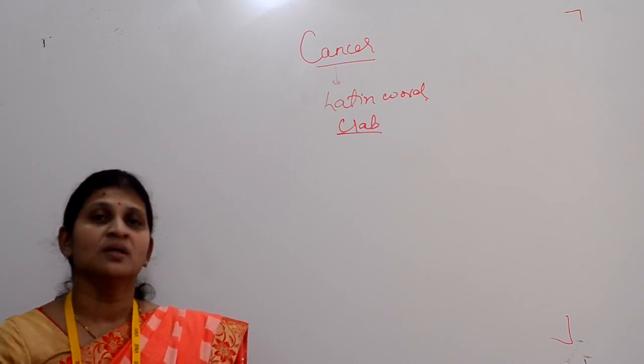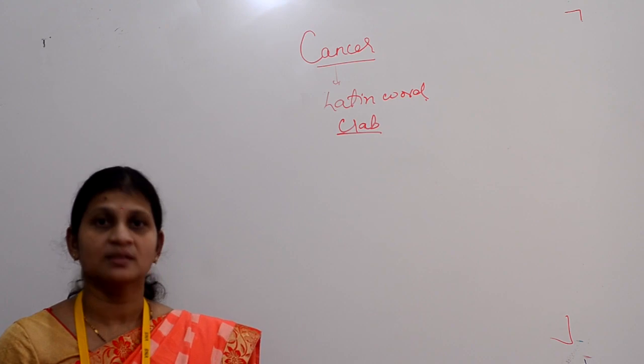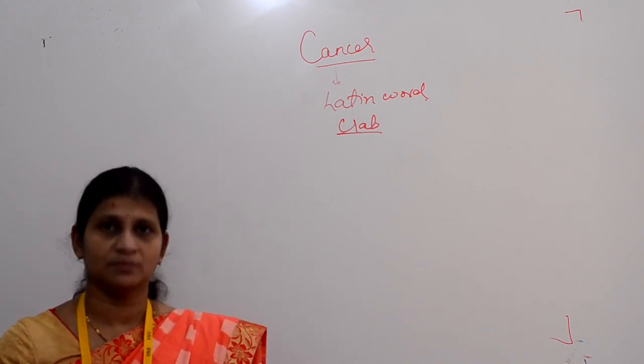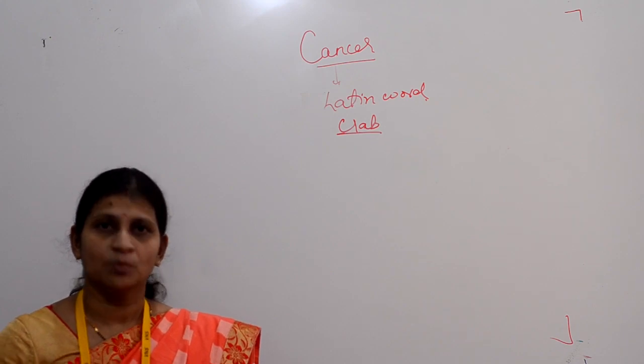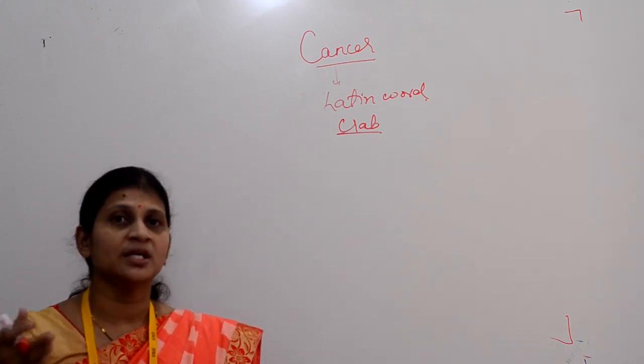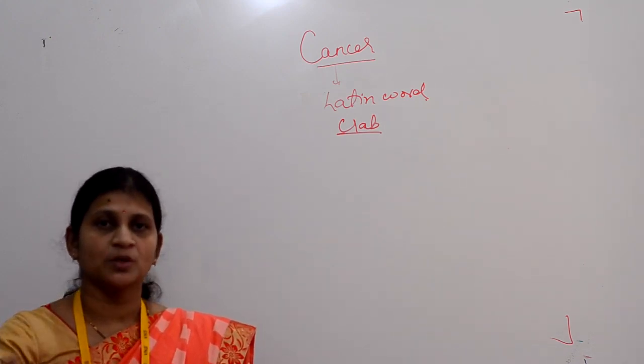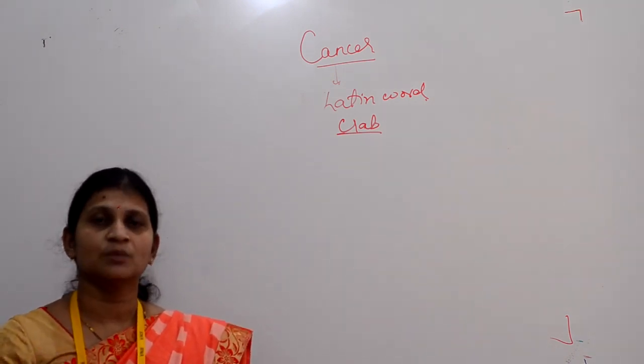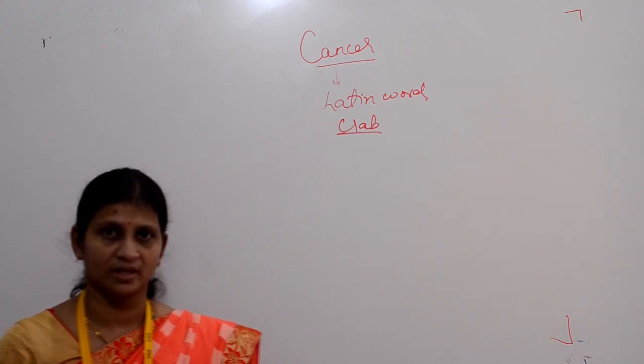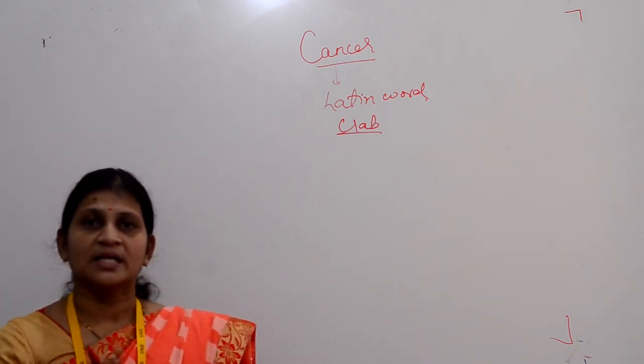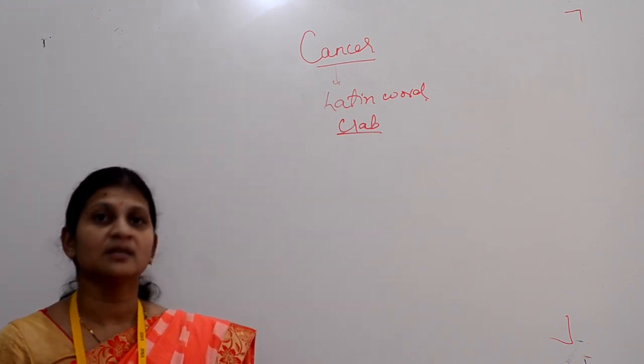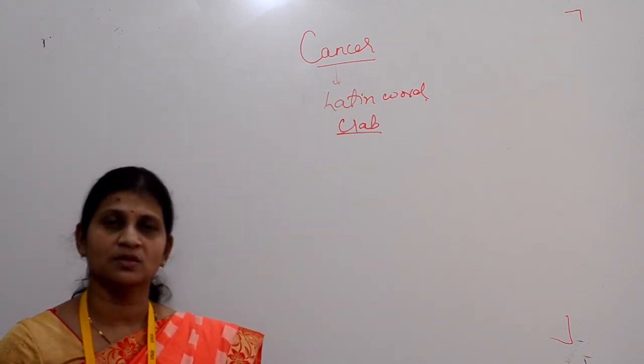When they grow in an uncontrolled manner, they may invade other tissues and cells of the body and develop into other organs via the lymphatic system and blood circulatory system. In cancer there is abnormal growth of cells that develop to other parts of the body.